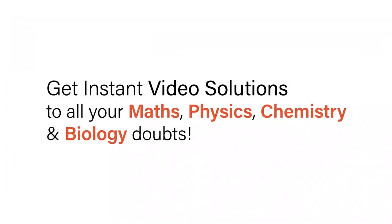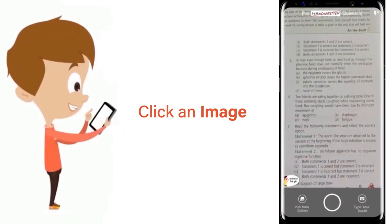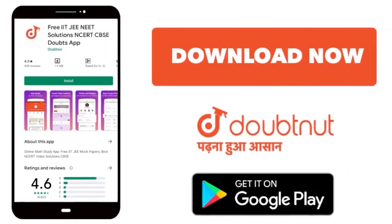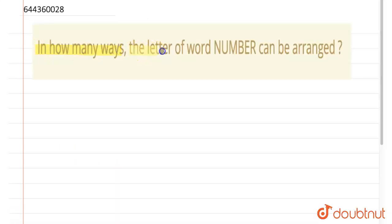With Doubtnut, get instant video solutions to all your maths, physics, chemistry and biology doubts. Just click the image of the question, crop the question, and get instant video solution. Download Doubtnut app today. In how many ways can the letters of word NUMBER be arranged?